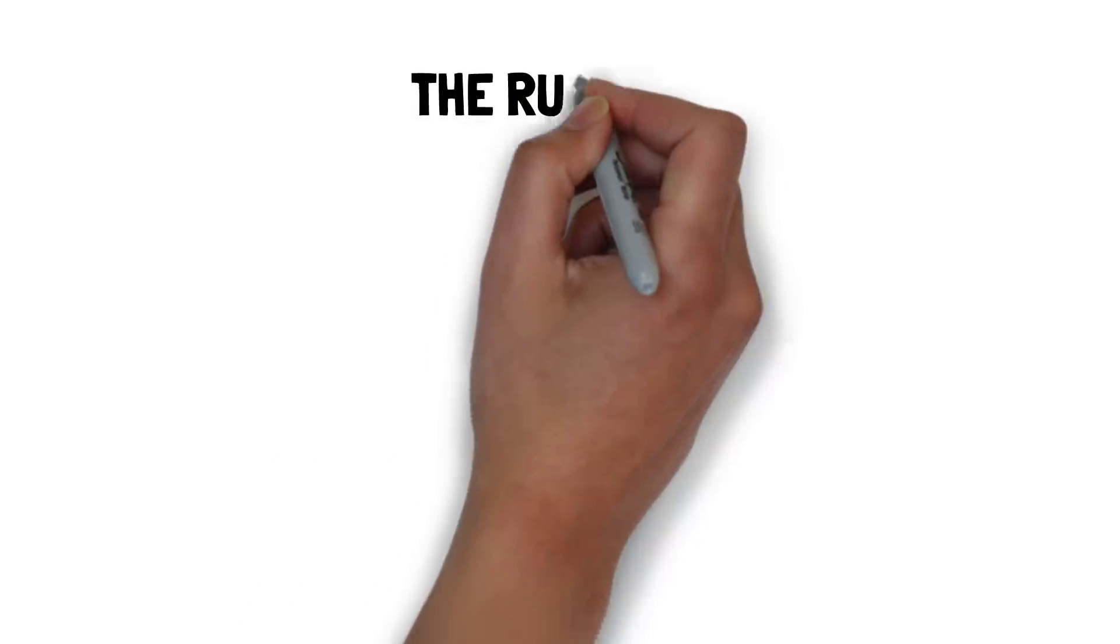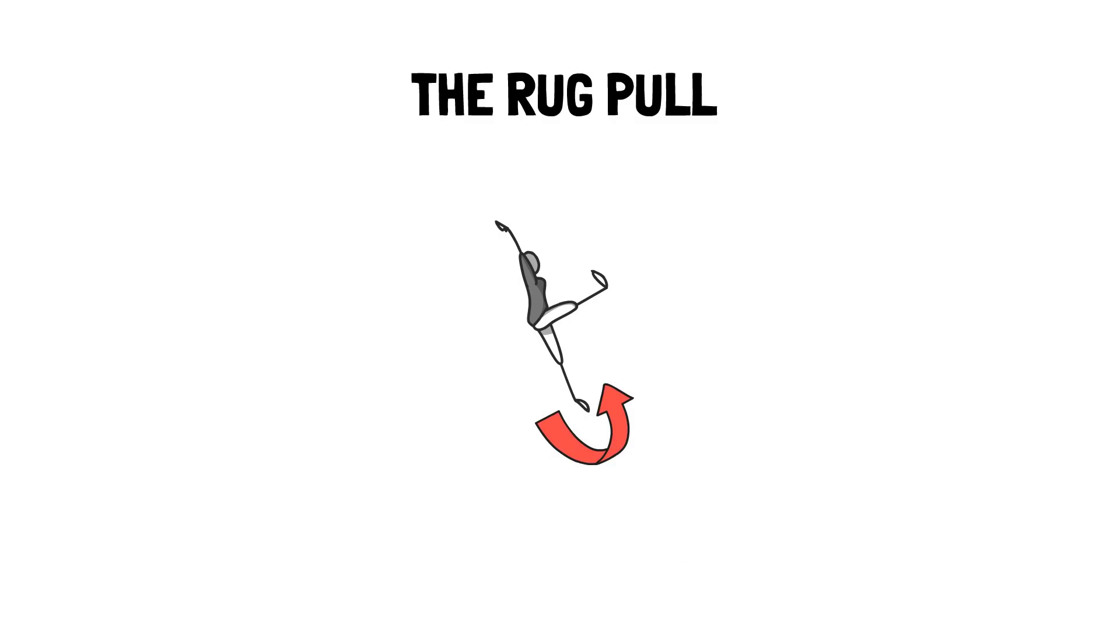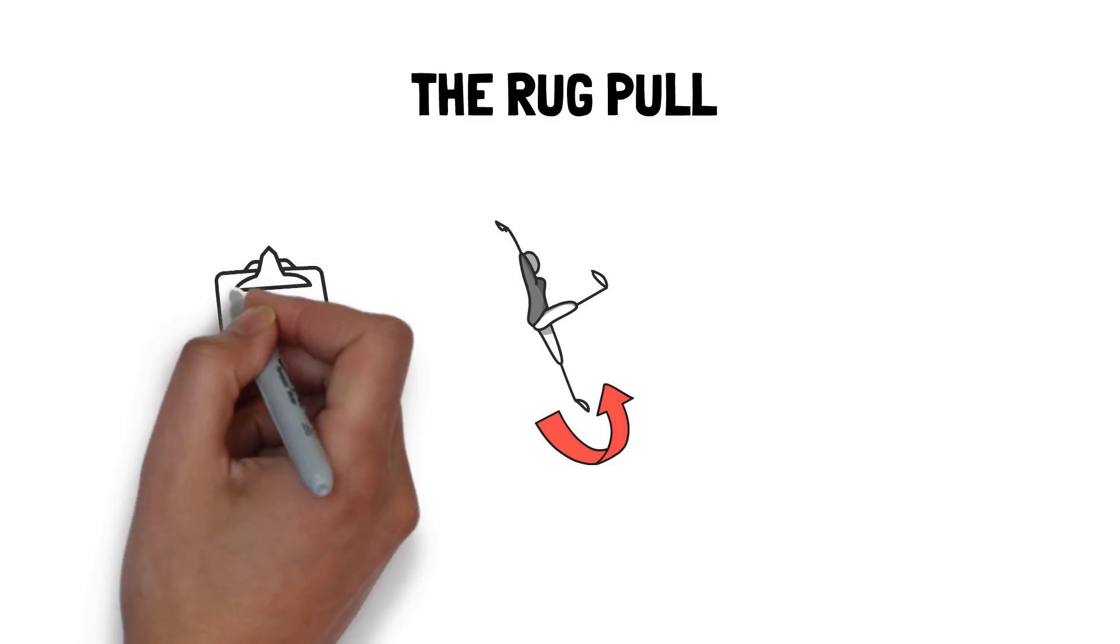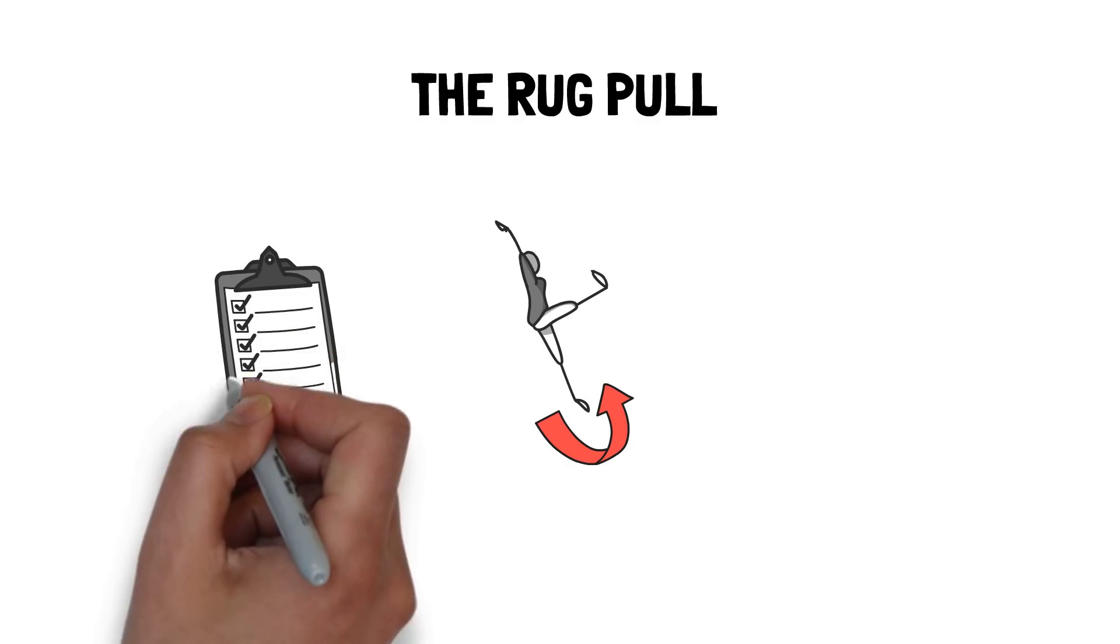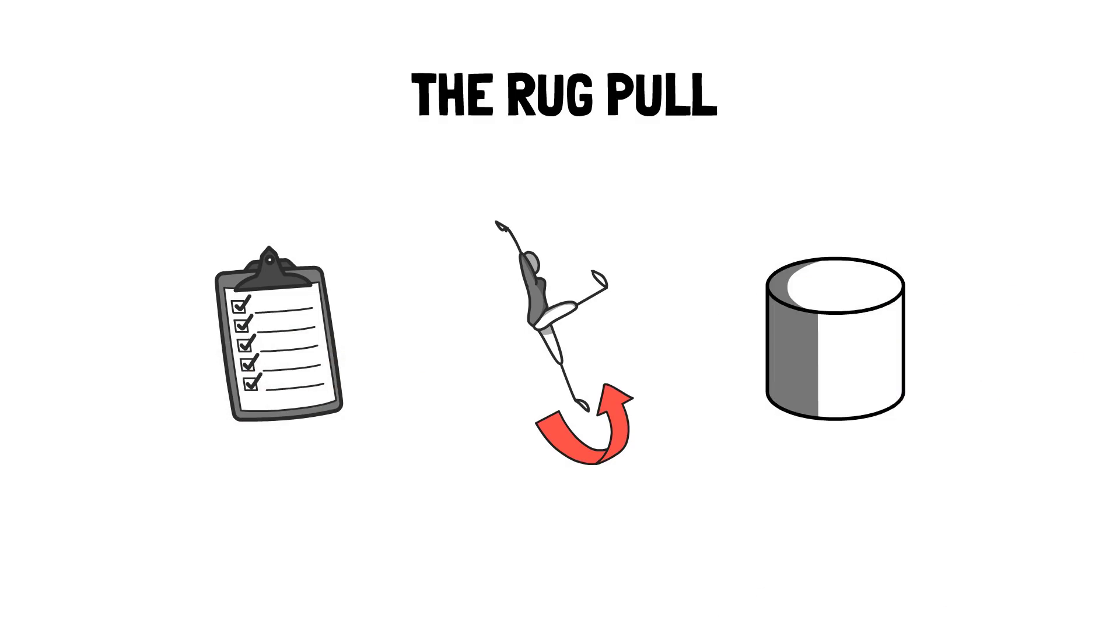The Ragpull. The Ragpull has become a commonly used term across all of DeFi and is now used to refer to many types of hacks and exploits. But it actually refers to a specific technique of suddenly removing the majority of liquidity from a liquidity pool.